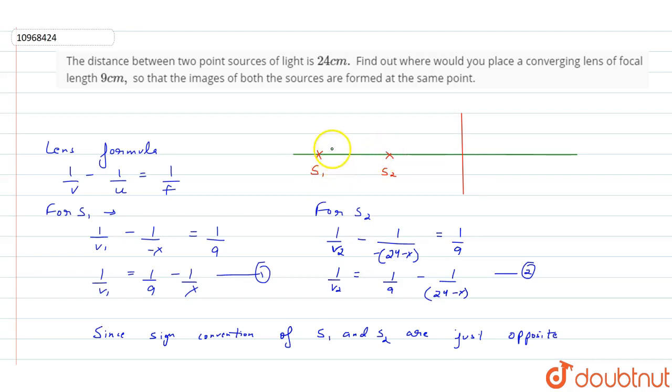So S1 is at distance x. S2 is on the opposite side at distance 24 minus x. Because this is x and the total distance between these two is 24, the other distance will be 24 minus 6.